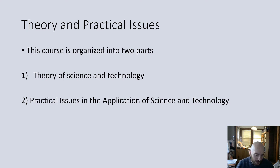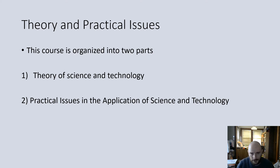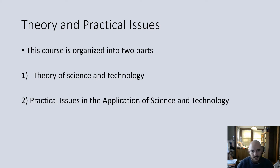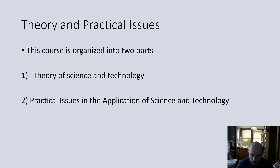The course is organized broadly into two parts: theory and practical issues. In the first part, weeks one through six, we'll be looking at the theory of science and technology — theories that explain the role of science and technology, how they work, and how they're integrated with other parts of society. We'll look at theories like actor-network theory, social constructivism, and other theories that help us understand how technology and science are parts of our lives and history.